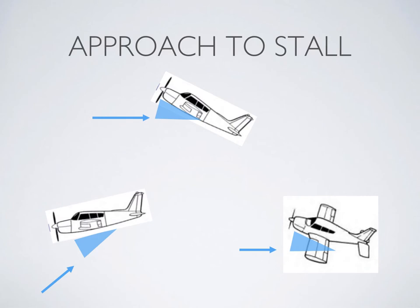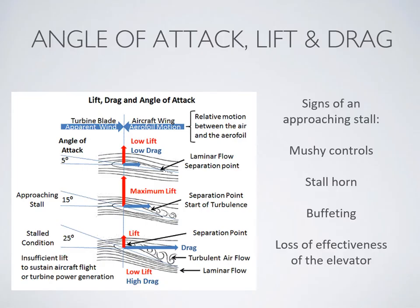Those types of stalls will be covered later in your training. Our approach to stall takes the aircraft through a slow flight condition, so the signs of an approaching stall are the same as the signs of slow flight: mushy controls, stall horn, buffeting, and finally a loss of effectiveness of the elevator.